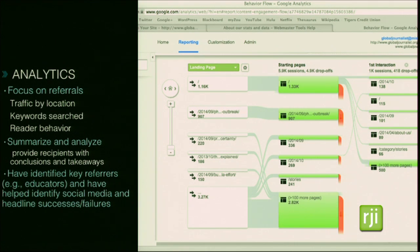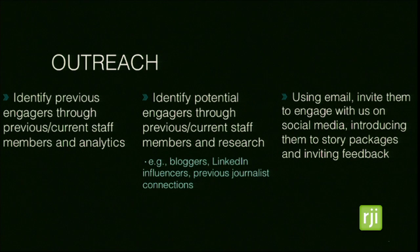One key finding has been identifying the main referrers to the Global Journalist website. We've identified that educators like to use our content in their curriculum, so we've been asking how we can better serve them. We've also been looking at how SEO-optimized headlines perform and what works in terms of search traffic. We've identified people who previously engaged with our content using analytics and by reaching out to Global Journalist staff, including educators, bloggers, LinkedIn influencers, and journalistic connections.